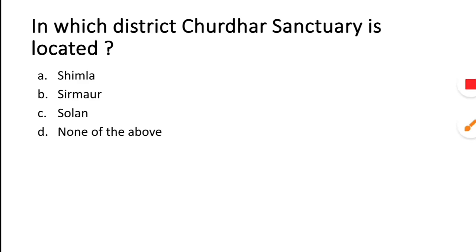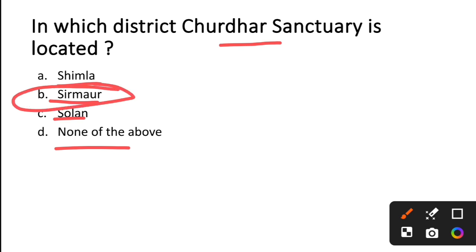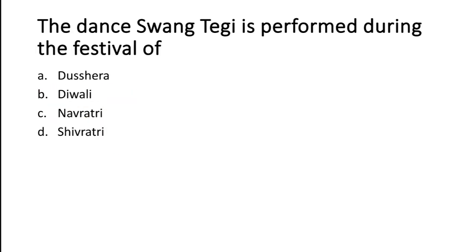The next question is: in which district is Churdhar Sanctuary located? Churdhar Sanctuary is located in Sirmaur district. The options are Shimla, Sirmaur, Solan, or None. Option B — Sirmaur — is the right answer. Churdhar Peak is also located there.